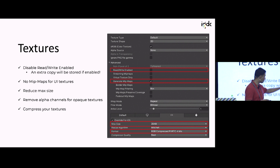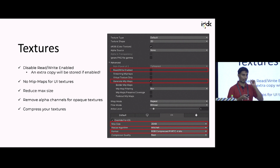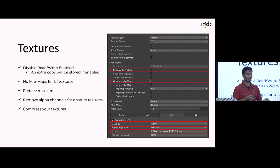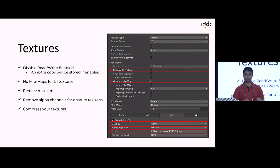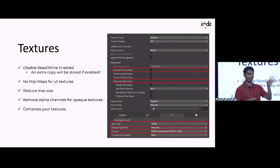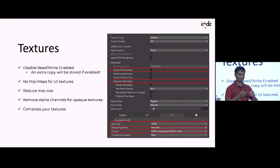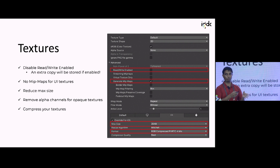The most important thing about textures is the 'Read/Write Enabled' option. What this does is store an extra copy of that texture in memory because Unity thinks you're going to use it from code. It's disabled by default, but in every project people hurry and check that checkbox, and before you know it you have 50,000 textures all with Read/Write enabled — and you're using double the memory you should.